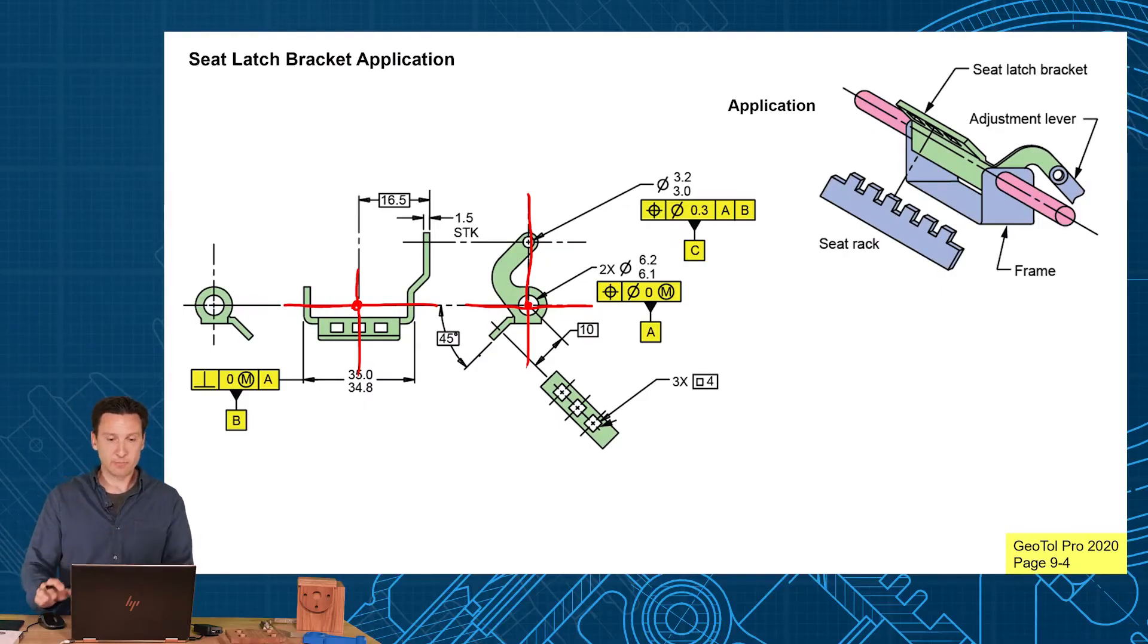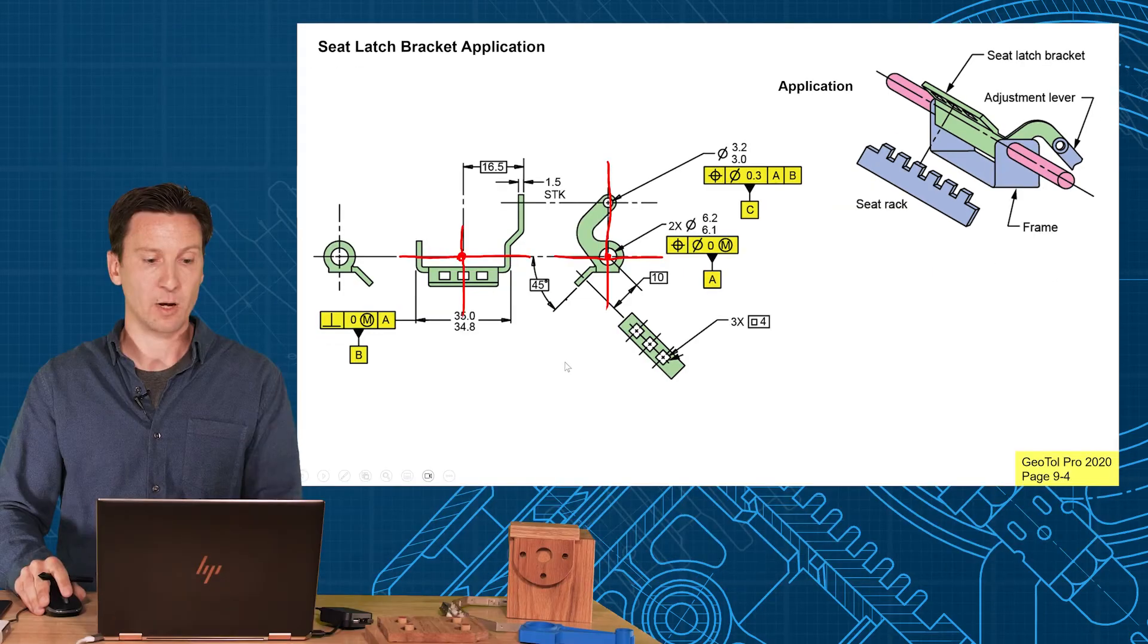So we've qualified those datum features. A will make them coaxial to each other with a position tolerance, zero at MMC. We want B, the center plane, to be perpendicular to that axis. And then this hole we want to be positioned, located relative to that main pivot point A.